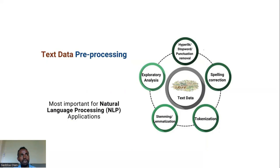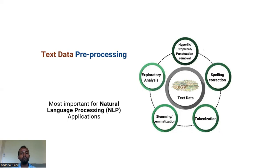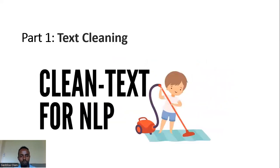A very challenging part of NLP is data preprocessing — dealing with missing data and learning to extract content and information. This includes steps like lowercasing, removing extra whitespace, tokenization, spelling error correction, stop word removal, and text vectorization, which is about converting text data to numbers.